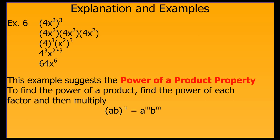This then leads to the power of a product property, which simply states that if you find the power of a product, you simply find the power of each factor in that product and multiply your final results together. So if you have the quantity a times b, raised to the m power, it will be a to the m power times b to the m power.